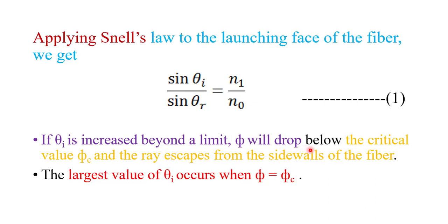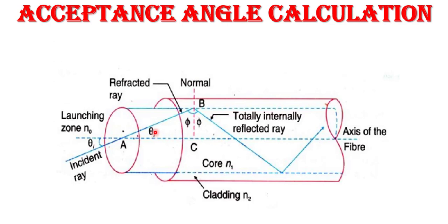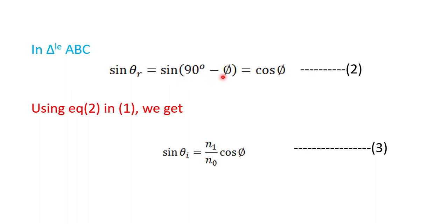If we increase theta i beyond the limit, phi drops below the critical value and the ray escapes from the side wall of the fiber. So the largest value of theta i occurs when phi equals phi c. From triangle ABC, sin(theta r) = sin(90 − phi) = cos(phi). This is equation number two. Substituting into equation one: sin(theta i) = (N1 / N0) × cos(phi). This is equation number three.